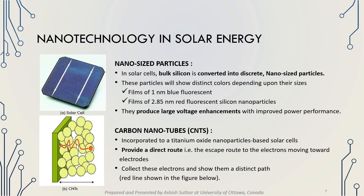In this slide, we discuss how solar energy is generated from nanomaterials. In a solar cell, bulk silicon is converted into nanosize particles. These particles show distinct colors depending on their size — films of 1nm show blue fluorescence and films of 2.85nm show red fluorescence. They produce large voltage enhancement with improved power performance. Carbon nanotubes made of titanium oxide provide a direct route for electrons toward the electrodes, improving the efficiency of the solar panel.